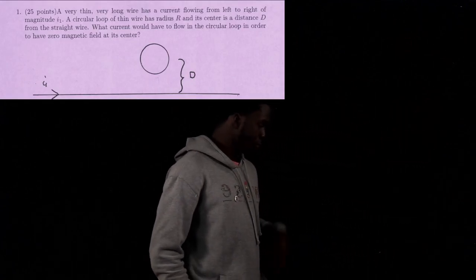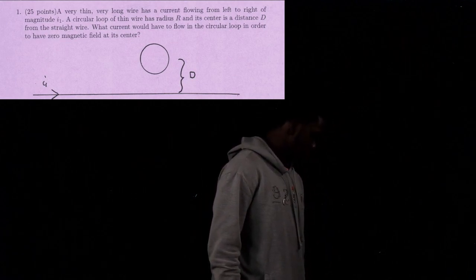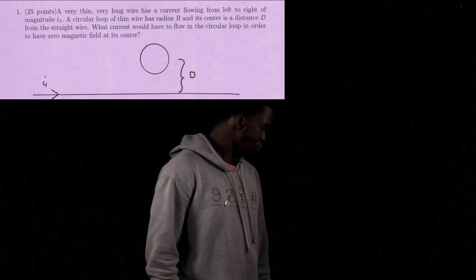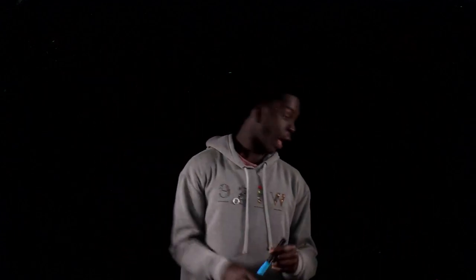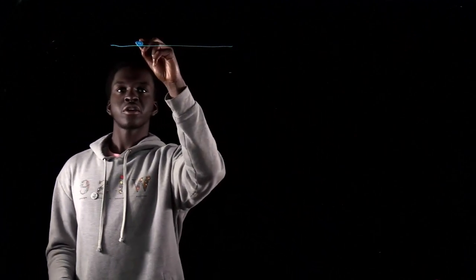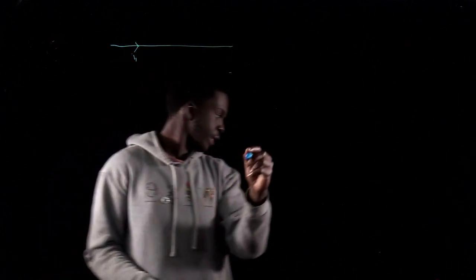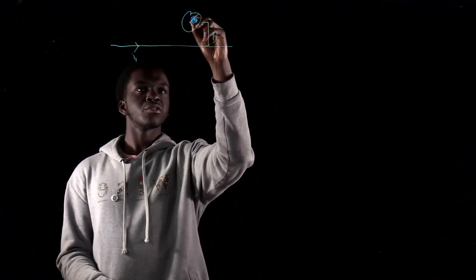Starting with number one: a very thin long wire has a current flowing from left to right of magnitude i₁. A circular loop of thin wire has radius r, and its center is a distance d from the straight wire. What current would have to be in the circular loop in order to have zero magnetic field at its center? We'll draw the diagram — the straight wire carries i₁, the circle has radius r, and the distance from wire to center is d.